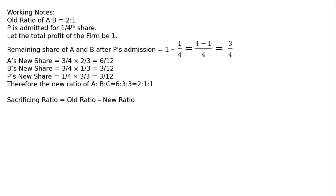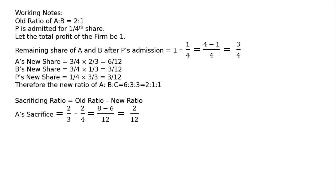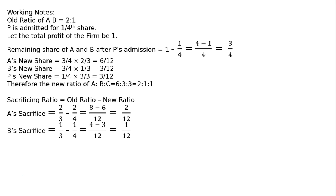Sacrificing ratio equals old ratio minus new ratio. A's sacrifice equals old share 2 by 3 minus new share 2 by 4, that is 8 minus 6 upon 12, equal to 2 by 12. B's sacrifice equals old share 1 by 3 minus new share 1 by 4, that is 4 minus 3 upon 12, equal to 1 by 12. Therefore, the sacrificing ratio of A to B is 2 to 1.